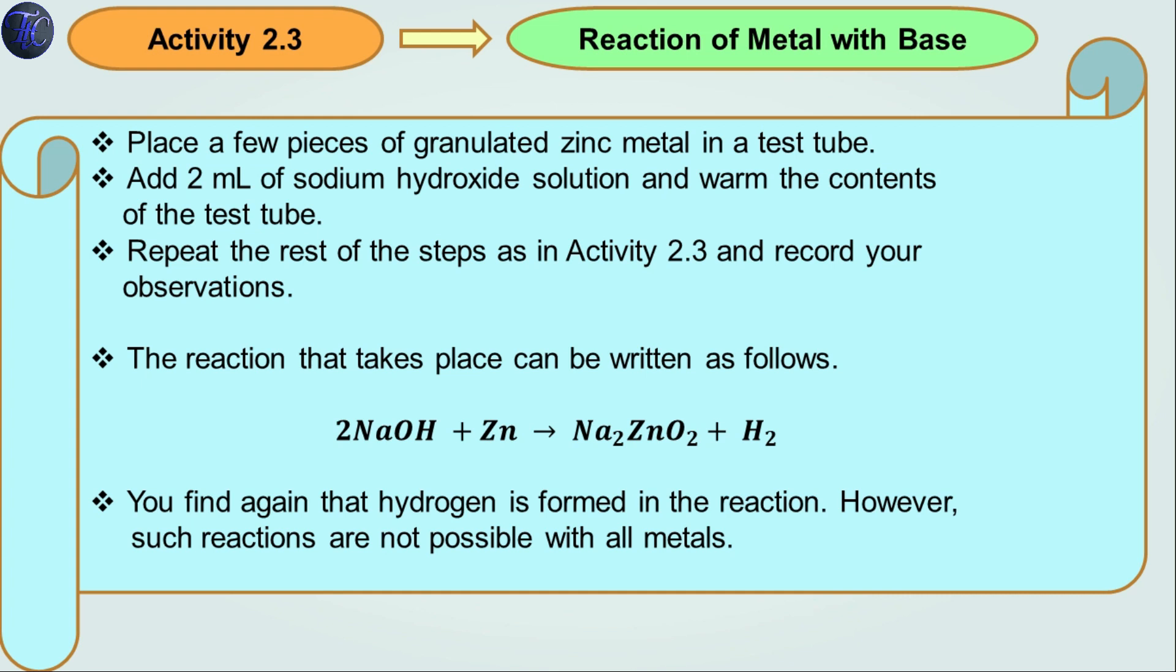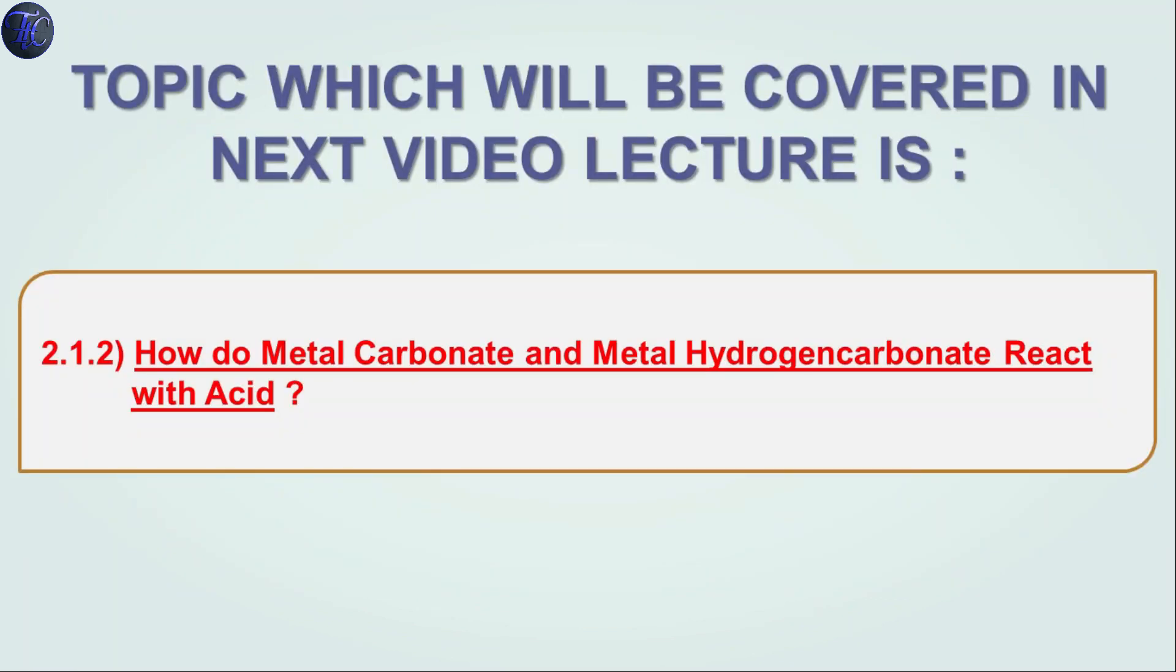You find again that hydrogen is formed in the reaction. However, such reactions are not possible with all metals. These are the two activities given in our textbook. The topic which will be covered in the next video lecture is: How do metal carbonate and metal hydrogen carbonate react with acid?